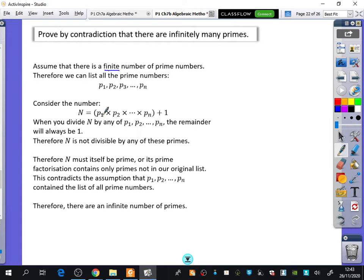This number N, which is all the prime numbers multiplied together plus 1, is not divisible by any of those prime numbers because there's always a remainder of 1. Since N cannot be divided by any of these prime numbers, N itself must be prime because it has no factors—none of the prime numbers are factors of it.